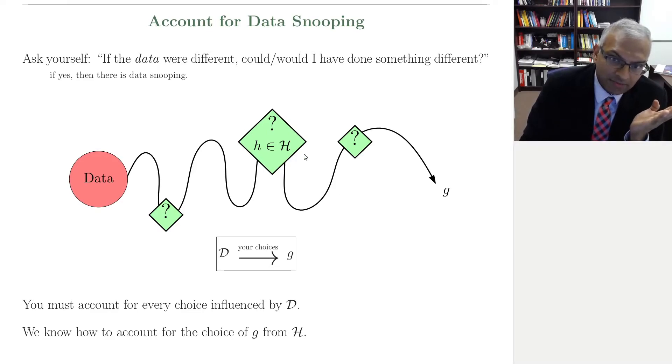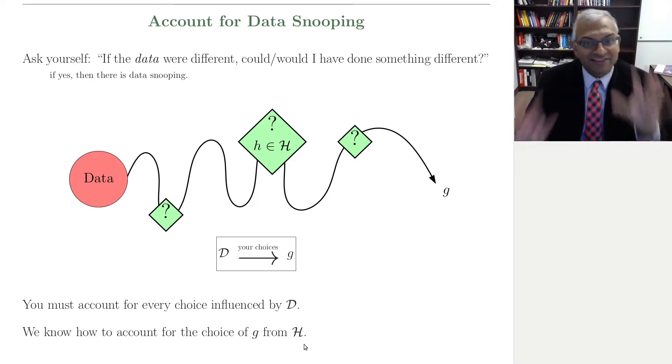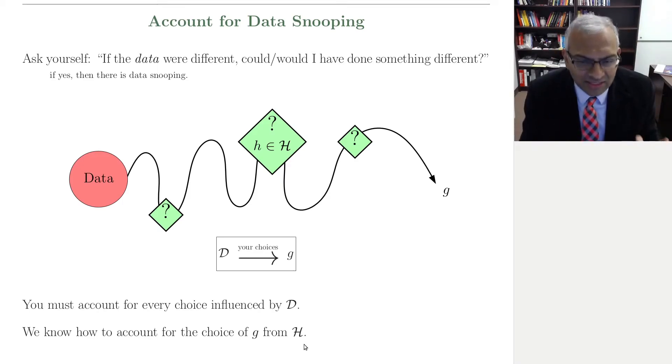Now yes, we did make a big choice anyway, by using the data to choose the final hypothesis. But we know how to account for that. We know how to account for the choice of G from H. That was the VC theory that set up this link between E_in and E_out.